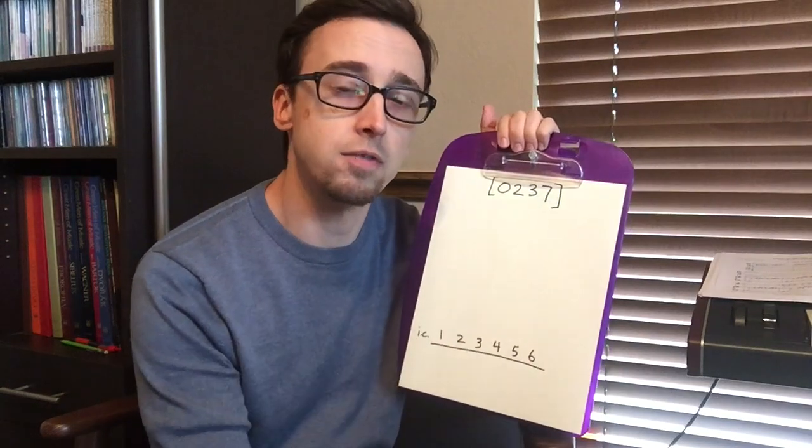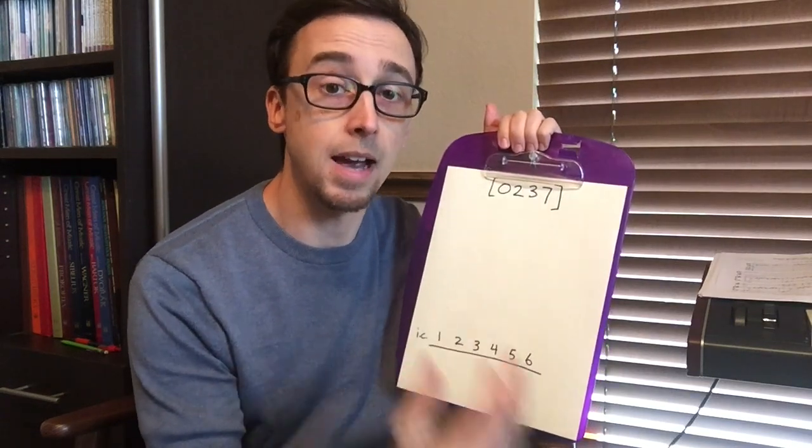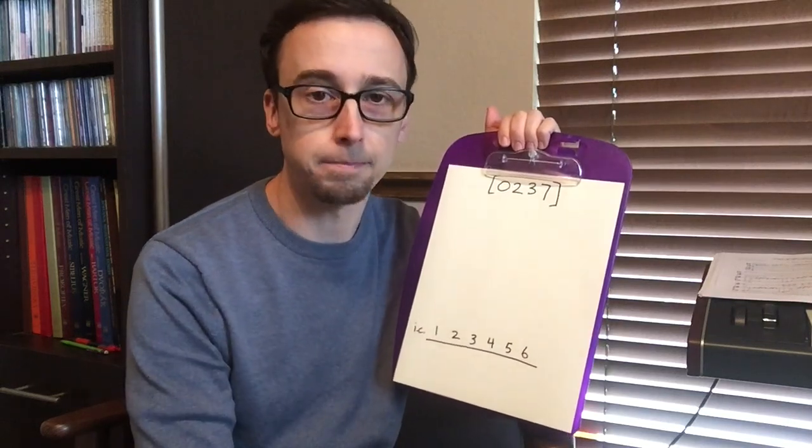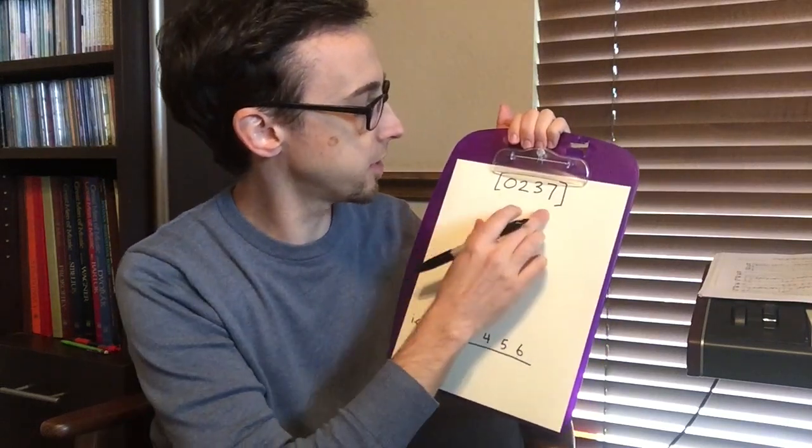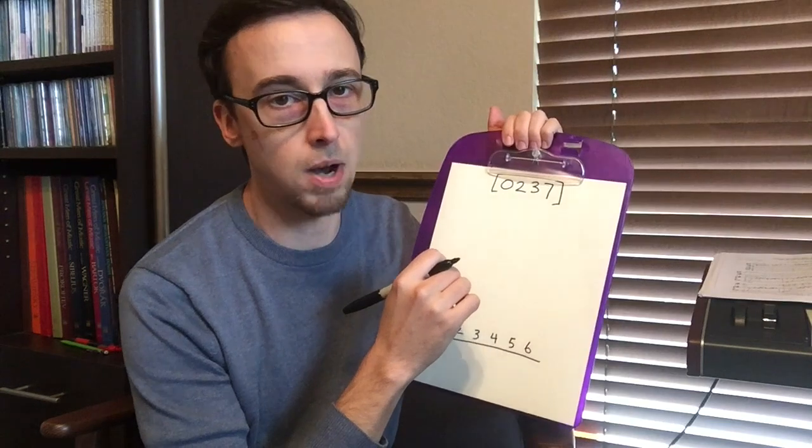And again, just as a review, our interval class vector tells us the number and types of intervals that we have within a given Pitch Class Set. And so here our Pitch Class Set is 0, 2, 3, 7, it's in prime form.